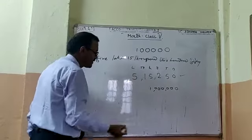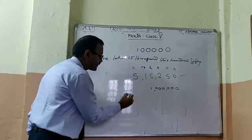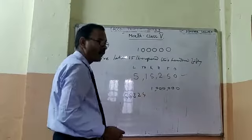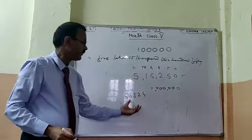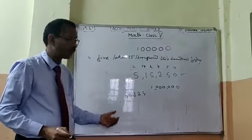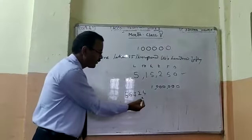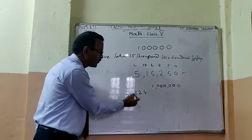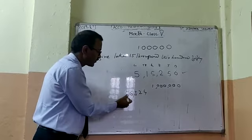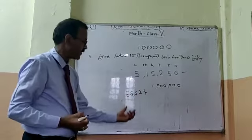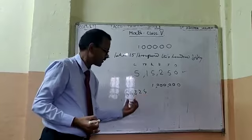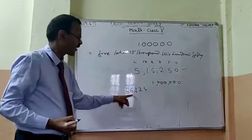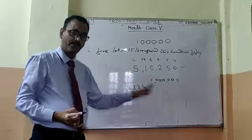Suppose the number given is five, six, three, two, four. Writing this in the Indian process: after three digits place a comma, then after two digits place a comma. That means this is the hundreds place, this is the thousands place. So we write: fifty-six thousand, three hundred, twenty-four.